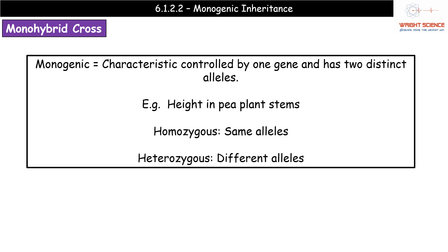What we're referring to here is the inheritance of a monogenic trait. Monogenic — mono meaning one, genic meaning gene — so basically a characteristic controlled by one gene with two distinct alleles: tall and short, green and yellow. We also used the phrases homozygous and heterozygous throughout. Homo means same — homozygous means two of the same alleles. Hetero means different. So homozygous dominant means two dominant alleles, homozygous recessive means both recessive alleles, and heterozygous means one dominant and one recessive allele.